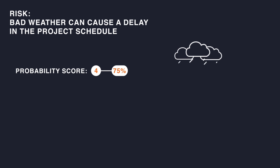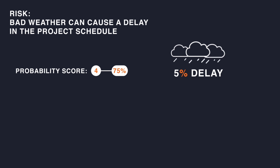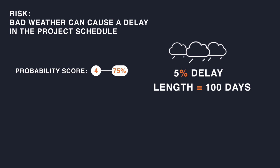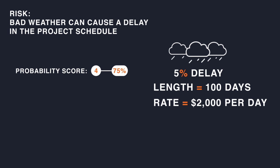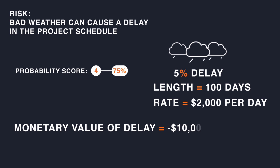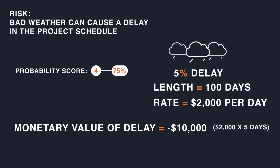Looking at the impact of this risk, you can estimate a possible 5% delay due to poor weather. To equate that to a monetary value, you can assume that this is a 100-day project and the project is spending at an average daily rate of $2,000. If the project will take an extra 5 days, or 5%, that will cost an extra $10,000, which is $2,000 times 5 days. If we continue to do this analysis for all of our high priority and possibly medium priority risks, we will end up with a percent probability and an impact in terms of monetary value for each risk.